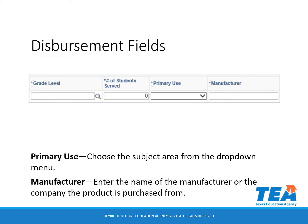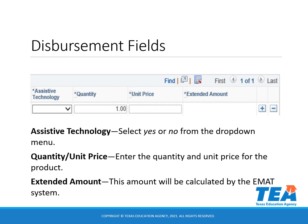In the manufacturer field, you will enter who made the product or the company you purchased the product from. Assistive technology is any item, piece of equipment, software program, or product system that is used to increase, maintain, or improve the functional capabilities of persons with disabilities. In the assistive technology field, you will click on the down arrow and select yes or no from the drop-down menu. In the quantity field, you will enter the number of units. In the unit price field, you will enter how much each unit costs. The extended amount field will be calculated when you click enter on your keyboard.